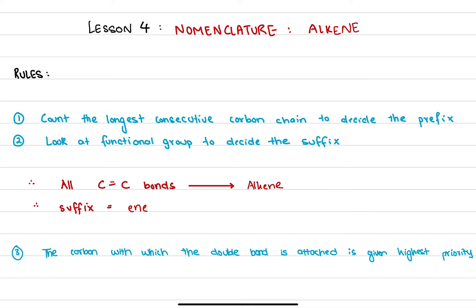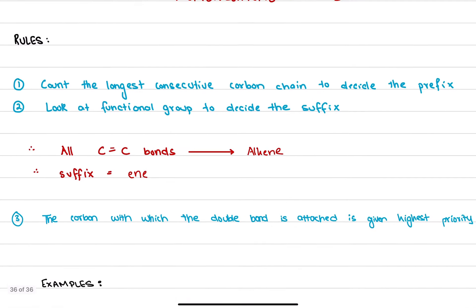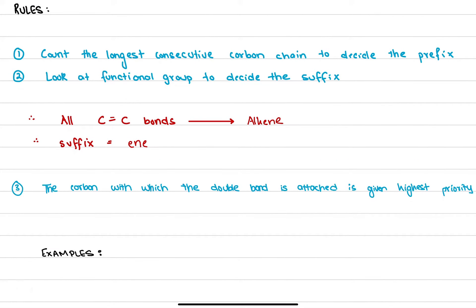The rules we have already talked about: rule number one is that you count the longest consecutive carbon chain to decide the prefix. Rule two is you look at the functional group to decide the suffix — the suffix is what comes at the end and the prefix is what comes at the very beginning. All CC single bonds suggest an alkane. In the case of alkenes, wherever you see a CC double bond, this is an alkene, and the suffix we use is '-ene'.